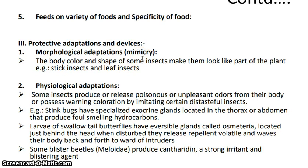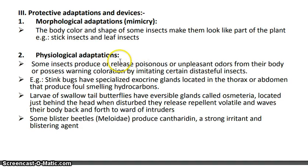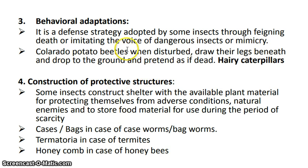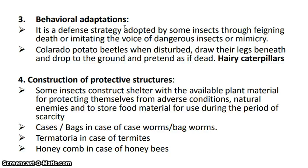Insects feed on a variety of food sources. They also have protective adaptations such as mimicry — adopting the color patterns of hazardous insects or animals to protect themselves from predators. Some insects release warning odors from their body; sting bugs and blister beetles are examples. Behavioral adaptations also exist as defensive strategies: when disturbed, some insects play dead, as seen in the Colorado potato beetle, which draws its legs beneath its body and drops to the ground.